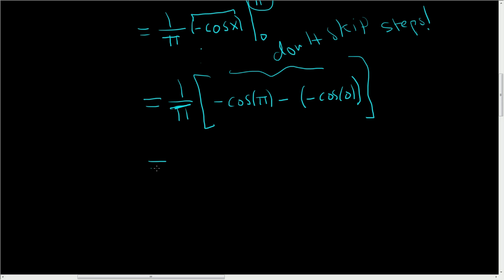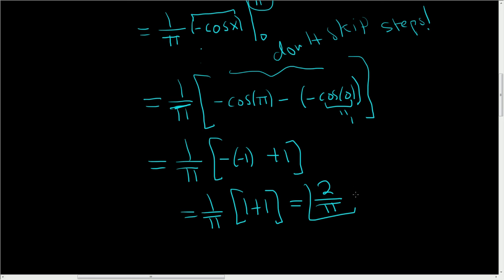All right, to finish, we have 1 over pi. Now the cosine of pi is negative 1, so we get negative negative 1 minus, and the cosine of 0 is equal to 1, so we end up with plus 1. So we end up with 1 over pi and 1 plus 1. 1 plus 1 is 2, so we end up with 2 over pi. And that's how you find the average value of the sine function from 0 to pi.